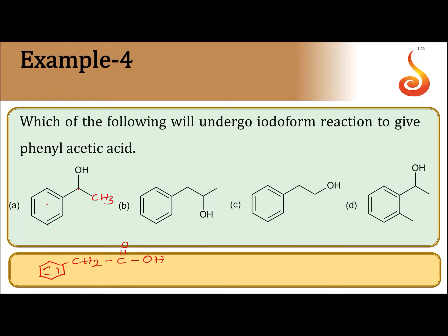Now let us see which compounds will respond to the iodoform reaction. The condition is that there should be a CH3CHOH group. Options A, B, and D all contain the CH3CHOH group, so those three compounds give the iodoform test.